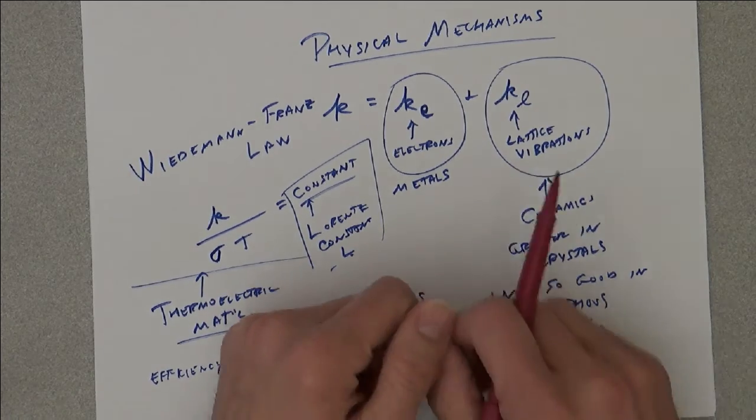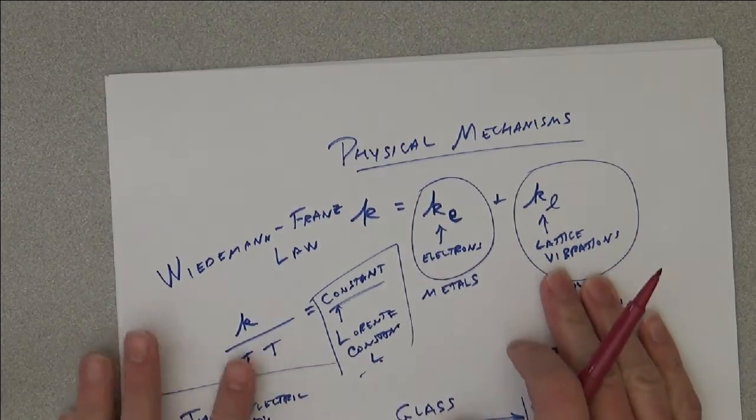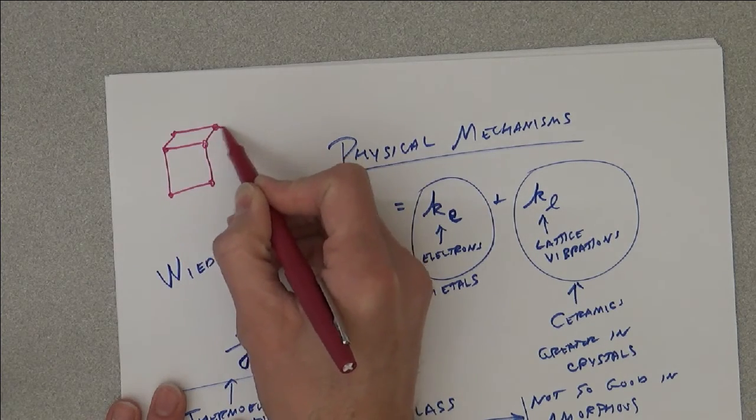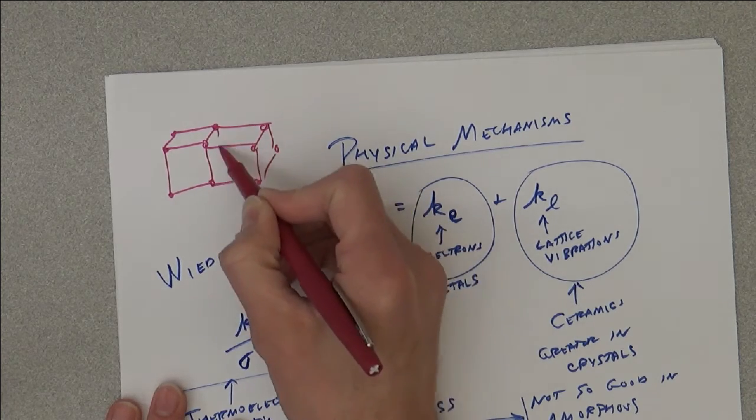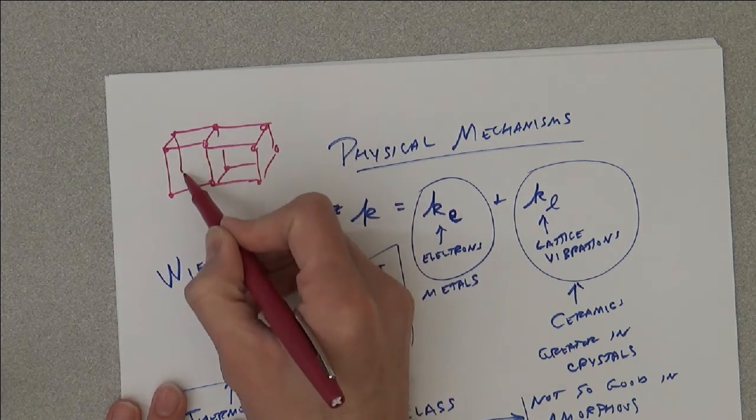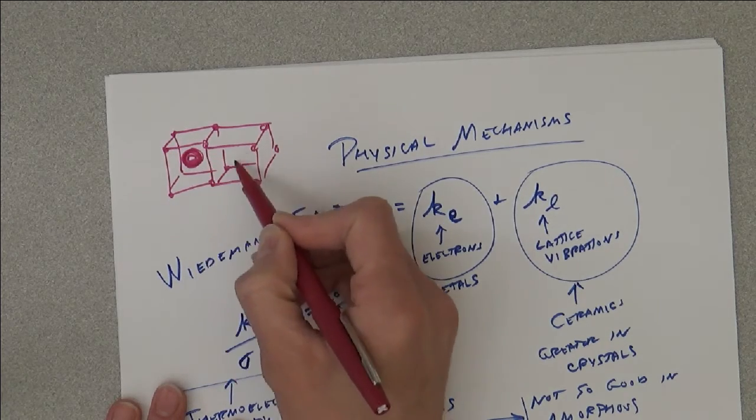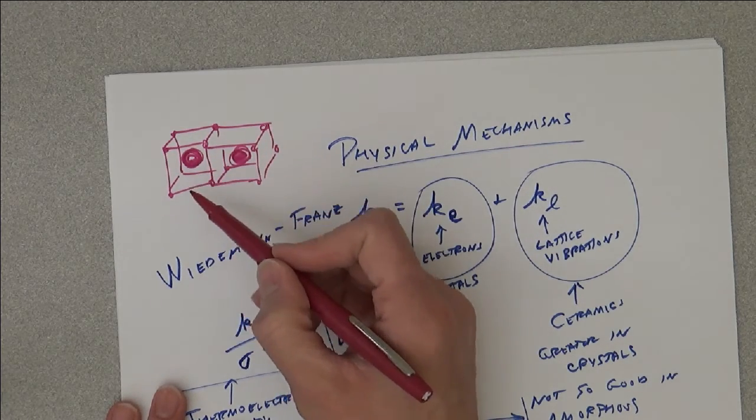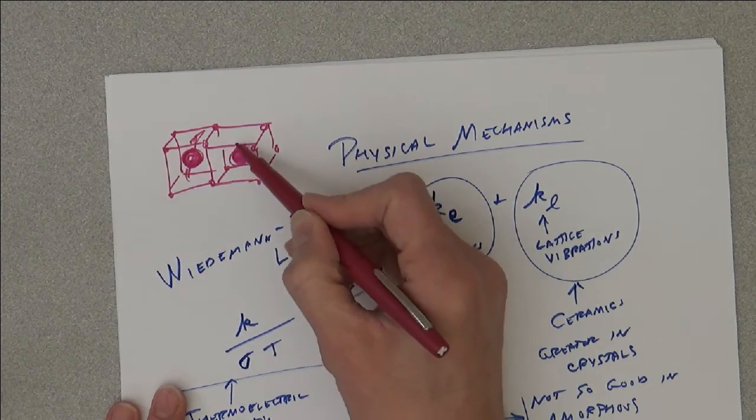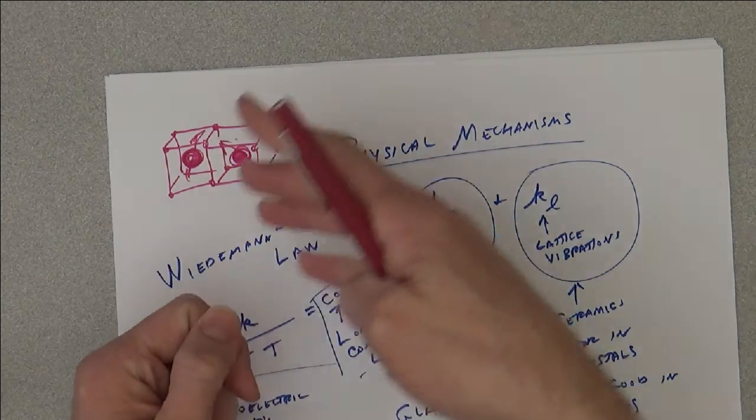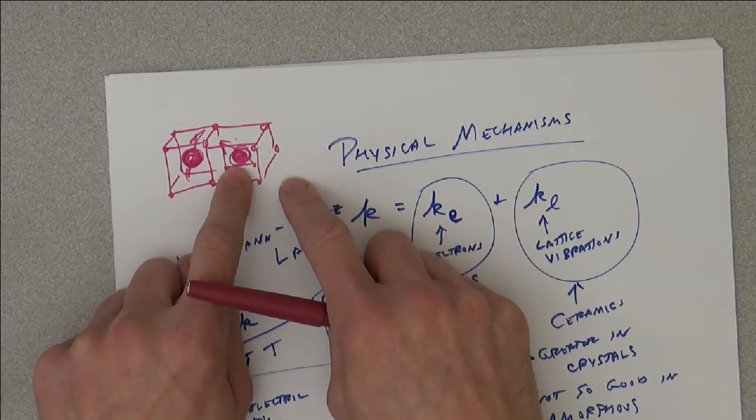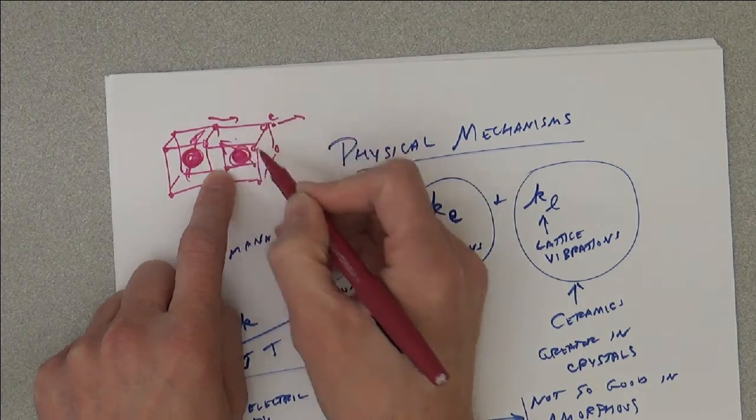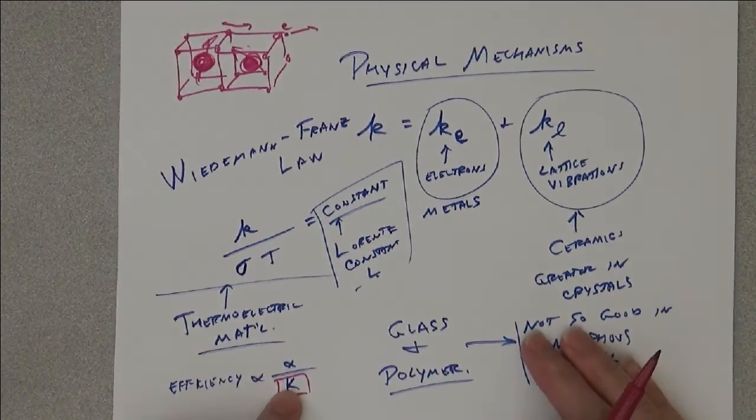For example, there's a class of materials called skutterudite in which you have a lattice. In this lattice you have these big atoms that sit in the center of the unit cells, every other cell. These big atoms have heavy mass and they will tend to get into some local mode where they're just vibrating locally. Instead of passing the energy forward, they're keeping the thermal energy local while the electrons can move freely around them.